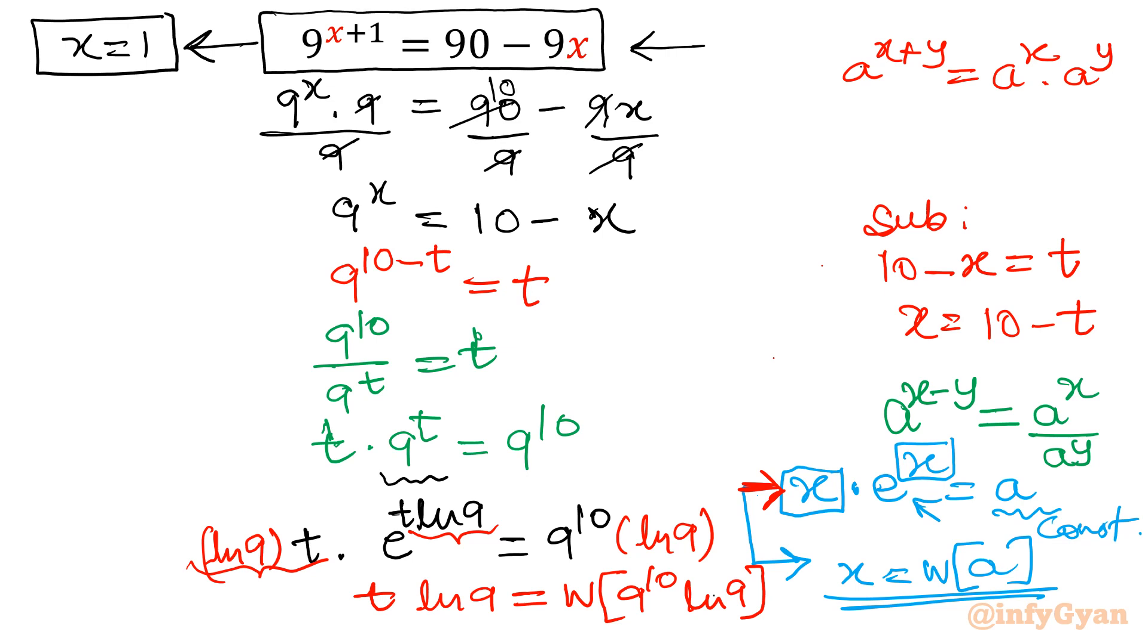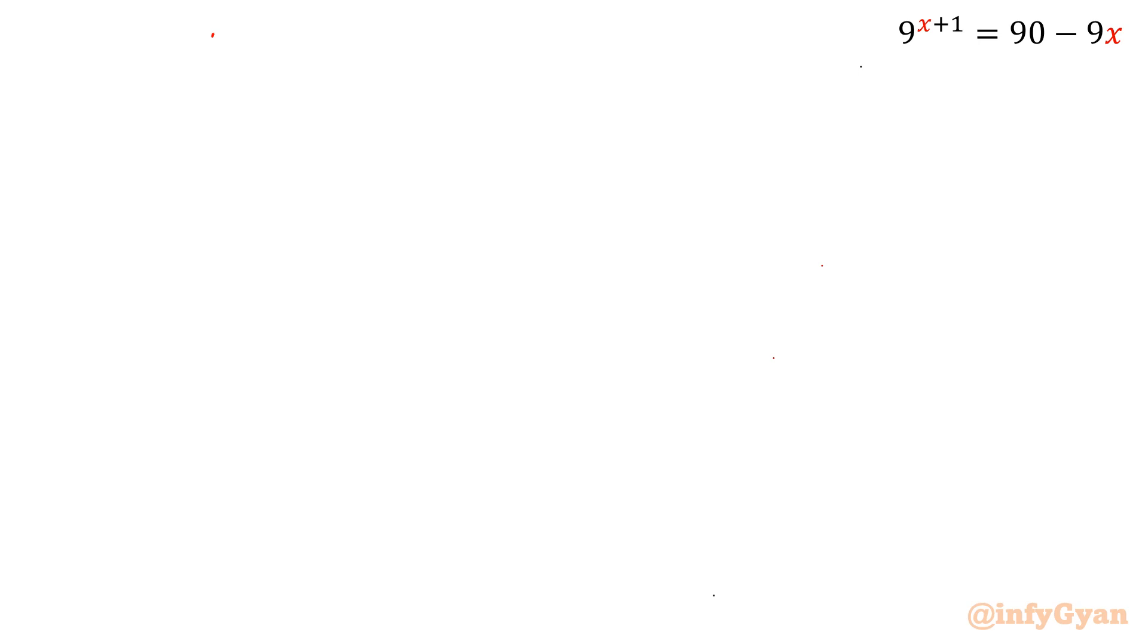Now find out t. t will be equal to Lambert W function 9 power 10 ln 9 over ln 9. Now what was our substitution. Now what was our substitution? What we presume t equal to 10 minus x. So in that place I can write 10 minus x.